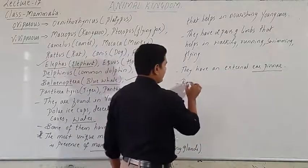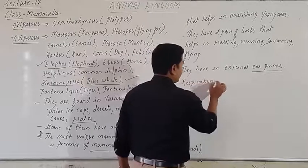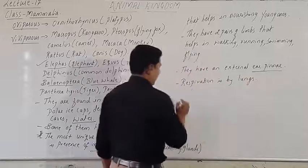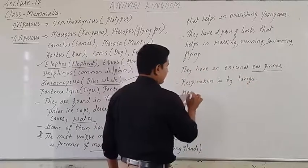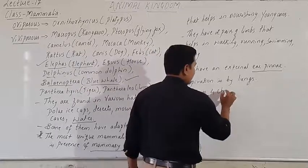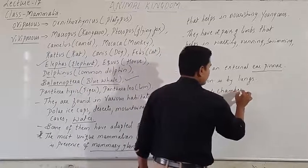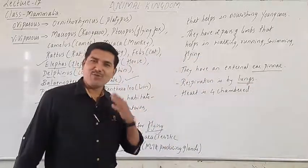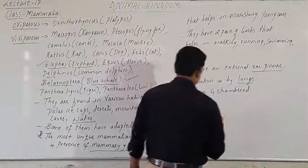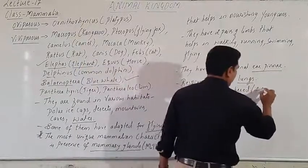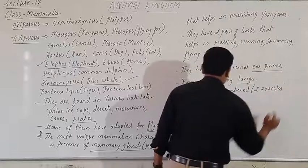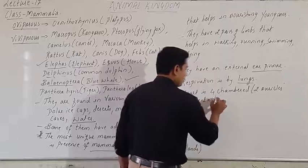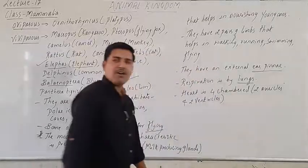Respiration is by lungs. The heart is four-chambered — out of the four chambers there are two auricles and two ventricles. That is why the heart is four-chambered.